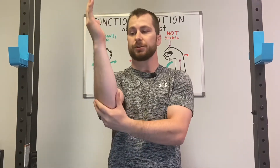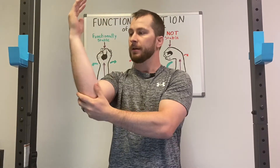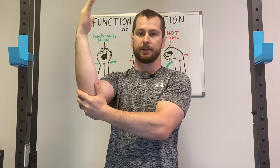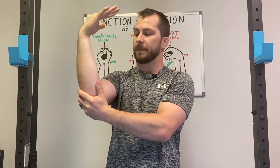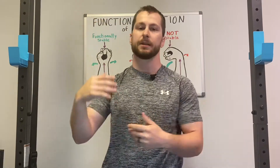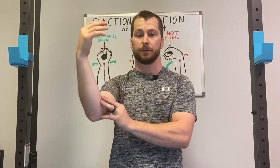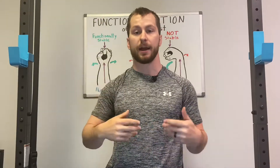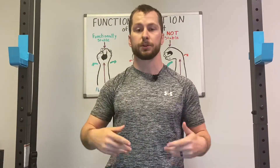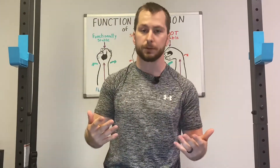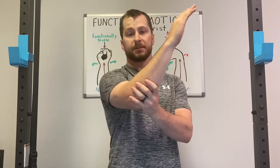First, let's discuss the motions of the wrist, starting with wrist flexion. That's going to be when your palm is moving down towards the anterior side of your forearm, and that's going to be controlled by your flexor digitorum group, which on the flexor side has superficial and deep portions.